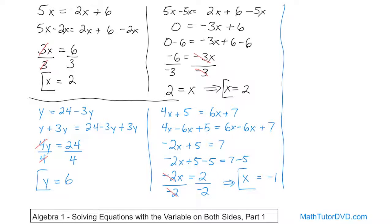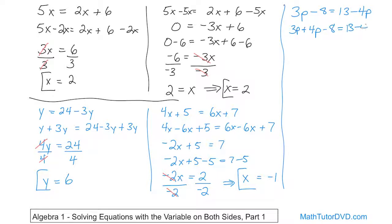Let's solve one final problem: 3 times the quantity p minus 8 equals 13 minus 4p. You have p's on the left and p's on the right. I usually try to move whatever's on the right-hand side to the left. Since this is negative 4p, I get rid of it by doing the opposite — adding 4p to both sides. Adding 4p to the right makes it disappear. On the left, 3p plus 4p is 7p, so we have 7p minus 8 equals 13. Now I work outer to inner and need to get rid of the negative 8.